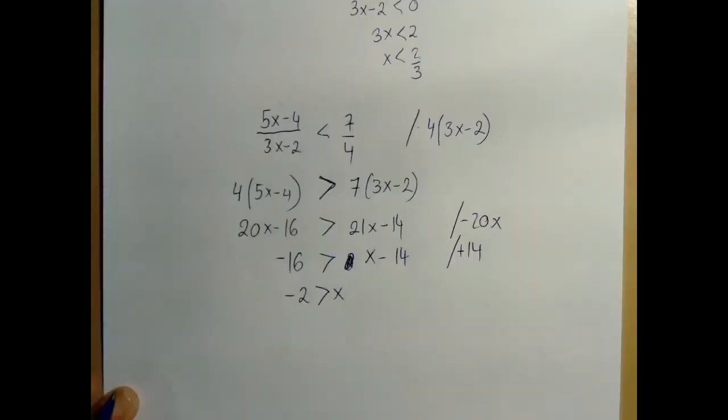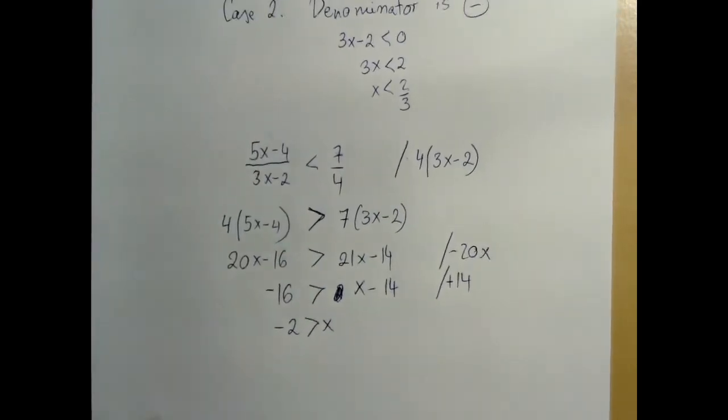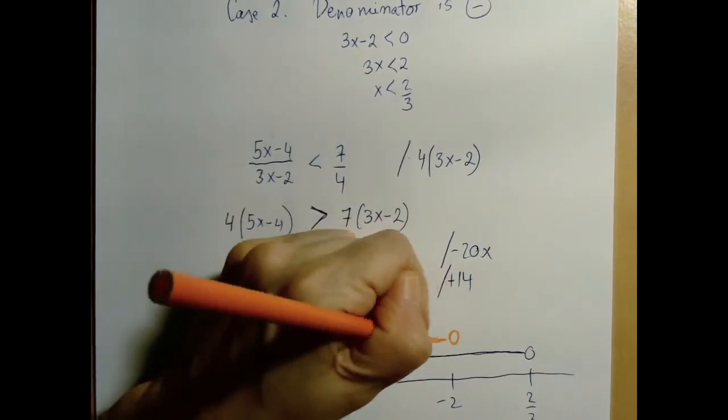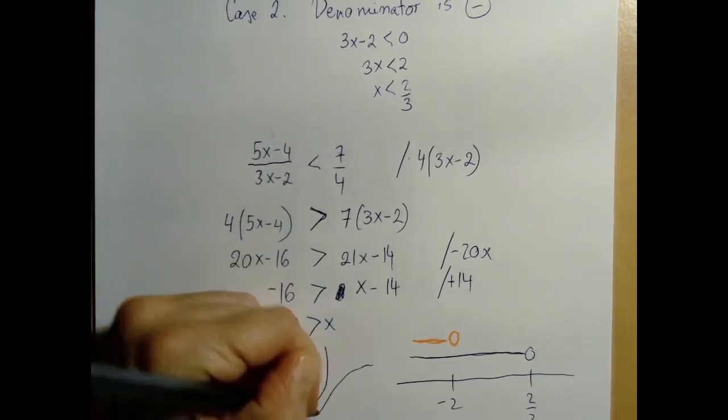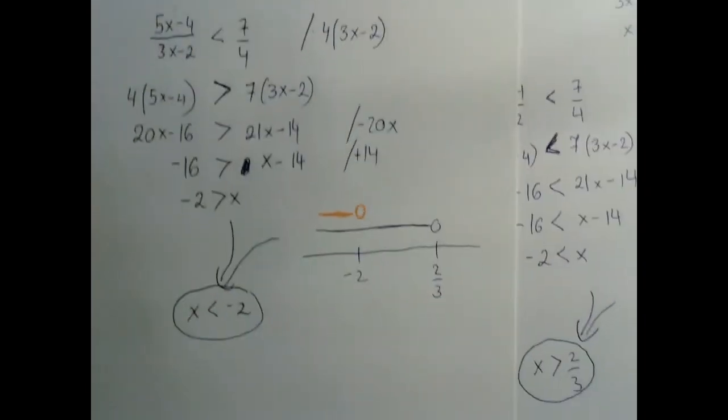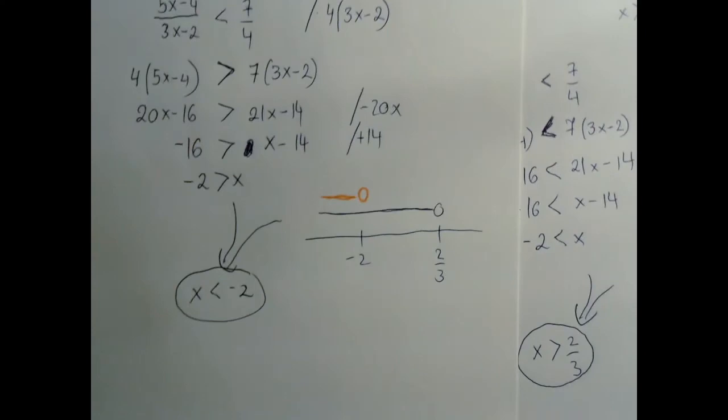And the computation is going to be pretty much the same. Subtract the same 20x, we add 14. So now what we got is that the numbers among which we are looking are the ones less than 2 thirds. And we found that among these numbers, the ones that work are the ones that are less than negative 2.